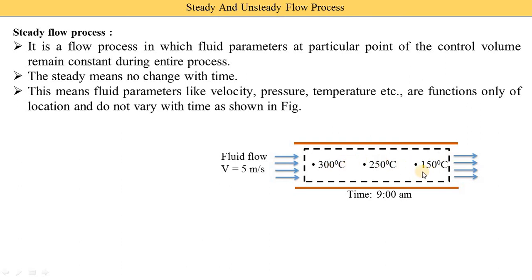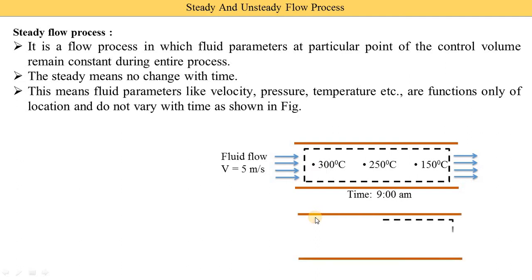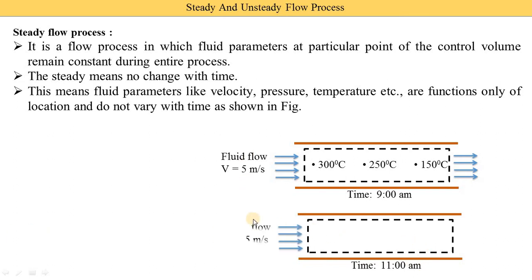Now you might think that since temperature is changing across points, why are we considering it a steady flow? The key phrase is 'functions only of locations.' Suppose we measure the temperature again at 11 a.m. — at a different time. The fluid is still flowing at 5 meters per second. We measure temperature at all three points and get the same results. That means this is the steady flow process.